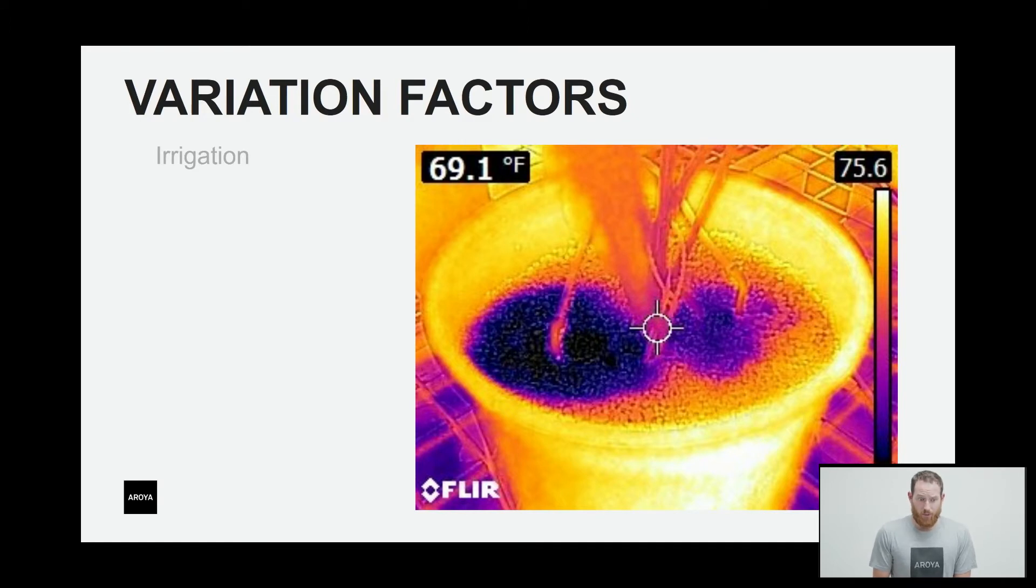Another variation factor, one that Arroyo does a great job at taking a look at, is irrigation. In this picture, we're displaying two emitters in a pot. You can see the pot around the outside, we can see the plant growing in the middle, and then the two emitters just by the black spots to the left and the right. If we look closely, we'll notice that the black spot on the right is much smaller. This is due to a clogged emitter. So that substrate is cooling off as that irrigation is being pumped into the substrate. And we can directly understand that the one on the right side is irrigating less, it's most likely clogged.